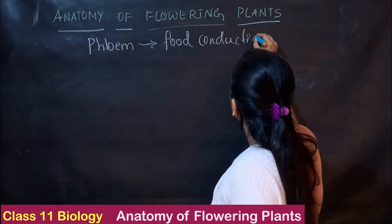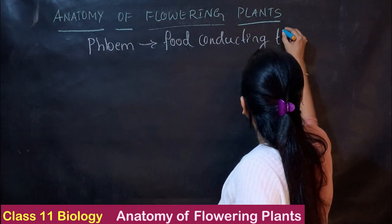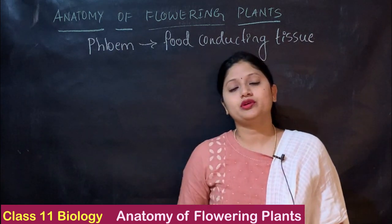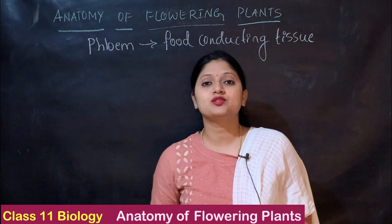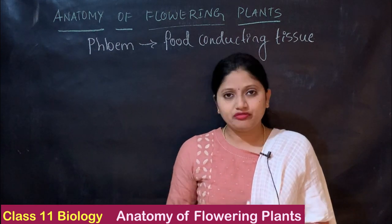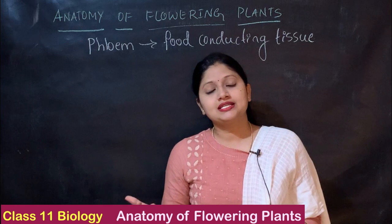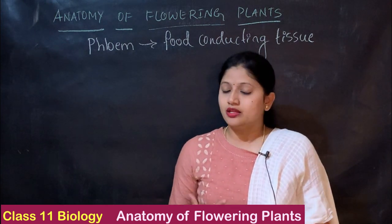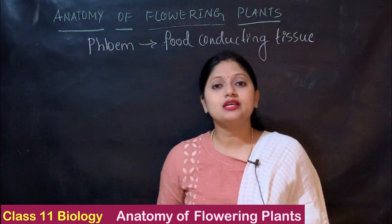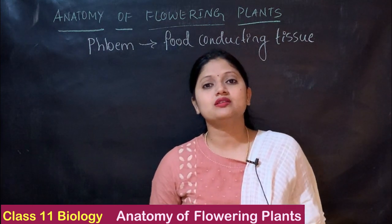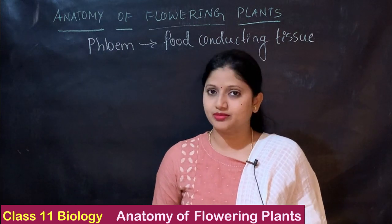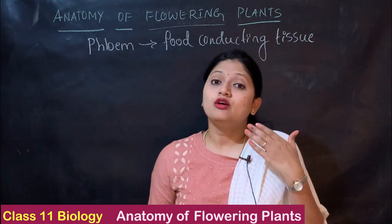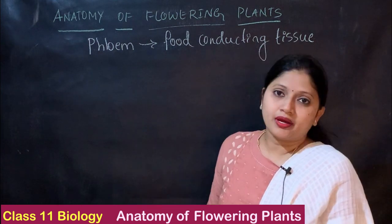Since the phloem is also a complex tissue, it is made up of cells with different shapes and different structures. Like we studied the xylem elements, we also get to see the phloem elements here. The phloem elements are the sieve tubes, companion cells, phloem parenchyma, and the phloem fibers. These are the four phloem elements, and we will see them one by one.